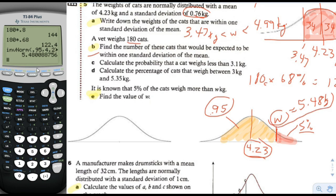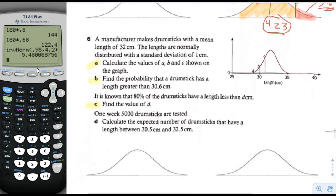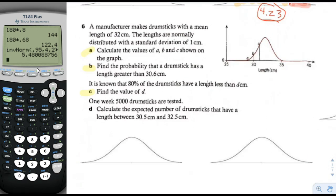So 5.48 kilograms and above is what 5% of the cats weigh — that's a pretty heavy cat. Moving on to number 6. A manufacturer makes drumsticks with a mean length of 32 centimeters. The lengths are normally distributed with a standard deviation of 1 centimeter. Calculate the values of A, B, C shown in the graph. Since the lines are separated by 1 centimeter and the middle is 32, A is 29, B is 30, and C is 31.